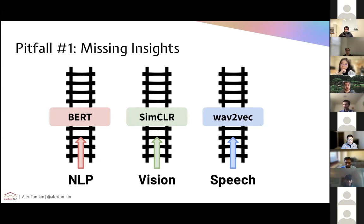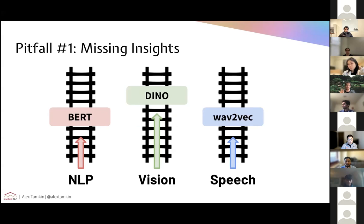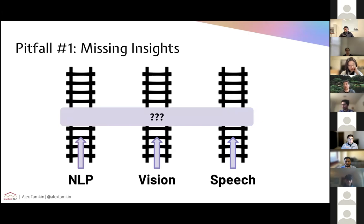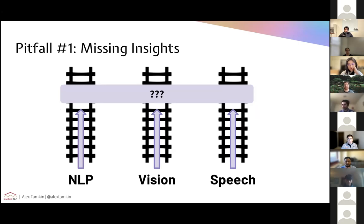What that means is that if you develop a better self-supervised learning technique for computer vision, you might improve the model along that particular track, but those insights don't necessarily transfer to these other domains we care about. If there is some sort of technique that's portable across all of these different domains, then maybe they could all advance together — if you have an improvement in one domain, it might transfer much more broadly. That core scientific question of what actually drives the success of self-supervised learning methods is somewhat missing when we focus on individual domains.